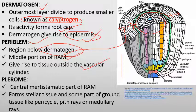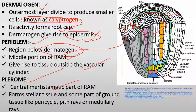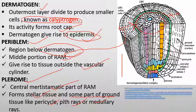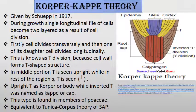The innermost layer is the plerome, which is the central core portion of the root apical meristem tissue. It forms the stellar system — the conducting system of xylem and phloem — and also some parts of the ground tissue, such as pericycle, pith rays, and medullary rays. So the plerome mainly forms the conducting tissue in the plant.